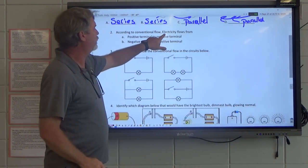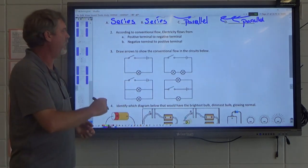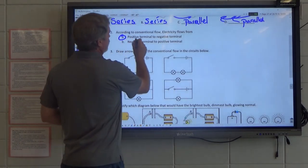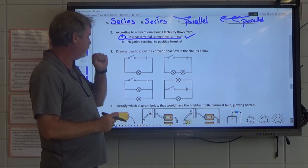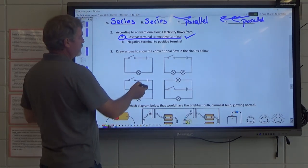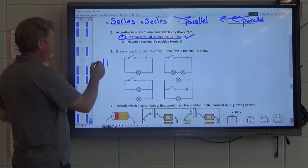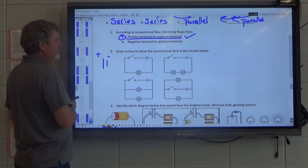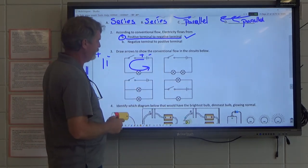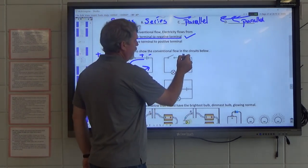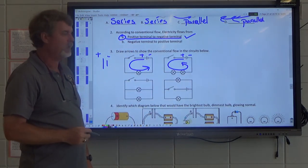According to the conventional flow, electricity flows from the positive to the negative terminal. Draw arrows to show the conventional flow. So what we need to do here is show that the long side of this model is the positive, and that side is our negative. So our electricity would flow from the positive to the negative. That is our conventional flow. We just draw a little loop showing that the flow goes in that direction.